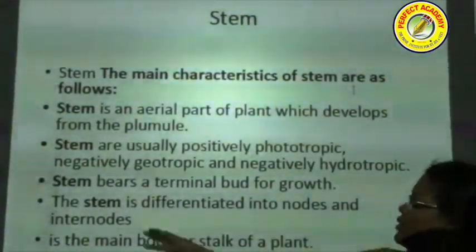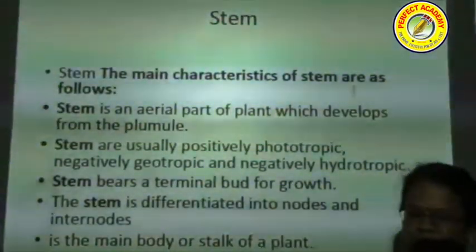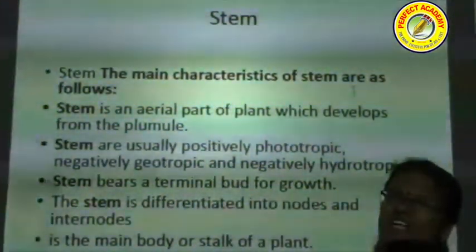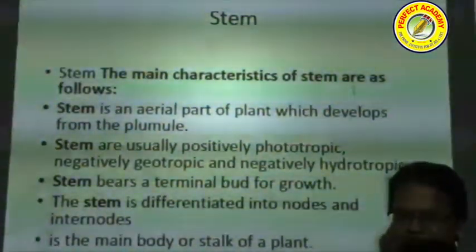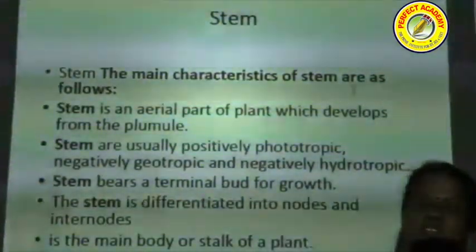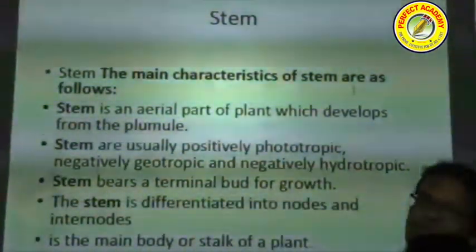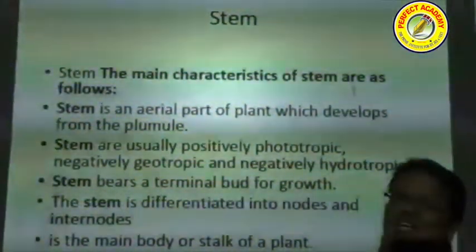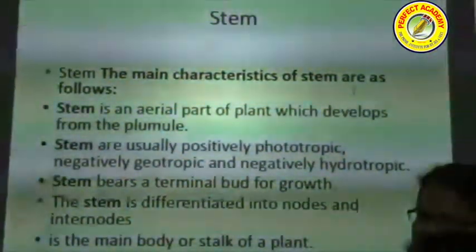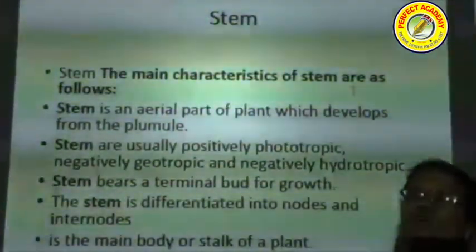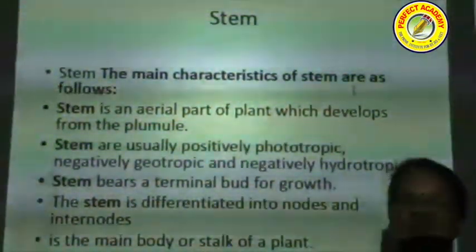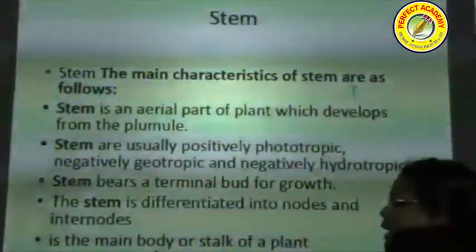Stems are negatively hydrotropic — they won't absorb water. The most important feature is that the stem bears buds, nodes, and internodes. The key difference between stem and root is that the stem bears nodes and internodes, whereas nodes and internodes are totally absent in the root.